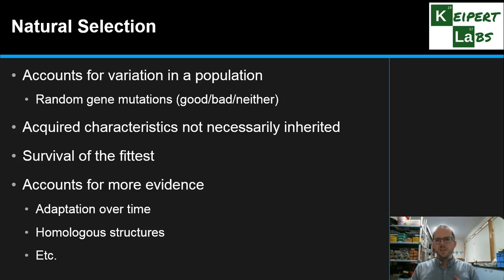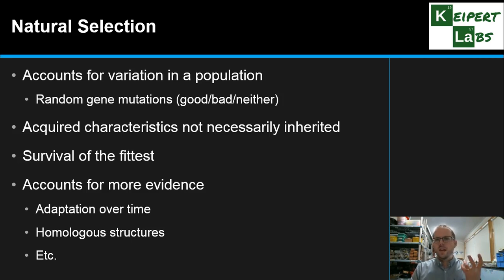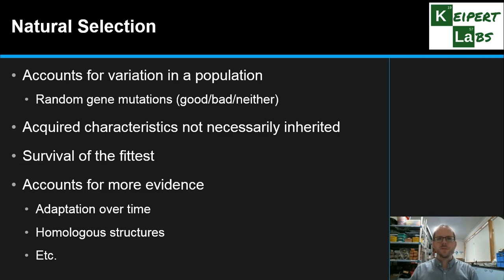So in this video we've gone through these two competing ideas, seeing that there's change over time — and this is about the how, not the what. Lamarck's idea of acquired characteristics doesn't fit as well with the evidence as Darwin and Wallace's model of natural selection. Thanks very much for watching. Bye for now.